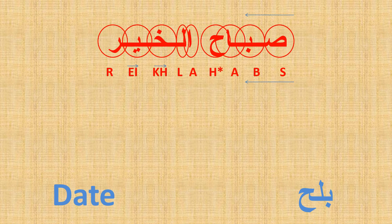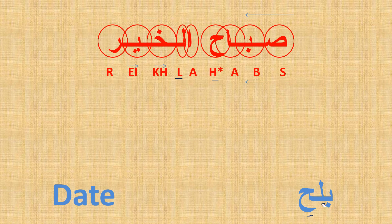Next word: Ba, Lam, Ha — 'Balah.' Balah means dates — the fruit. As in, 'I ate dates' — Balah.